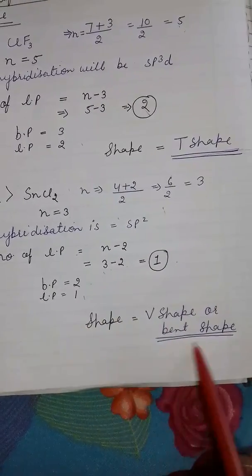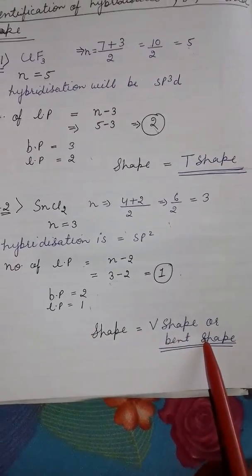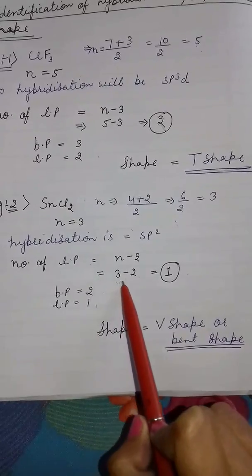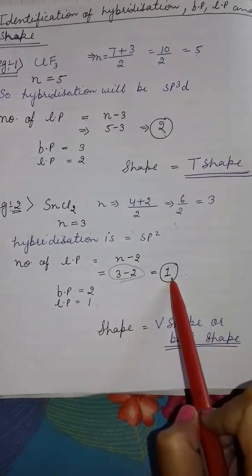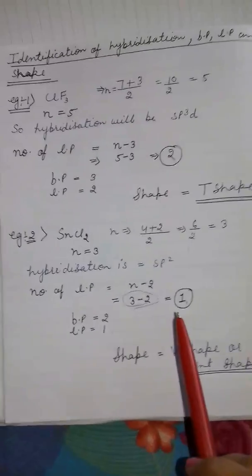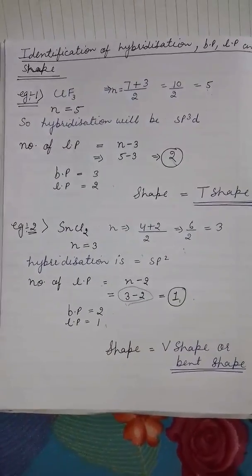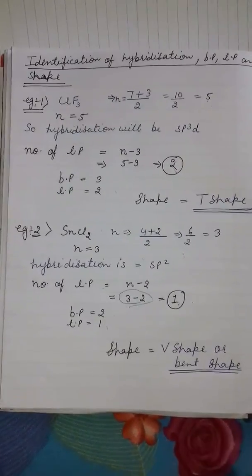So shape will be V-shape or bent shape. By using this trick, we can easily identify number of lone pairs present in any molecule. It is a very good trick to identify number of lone pairs. Thanks for watching. Have a nice day.